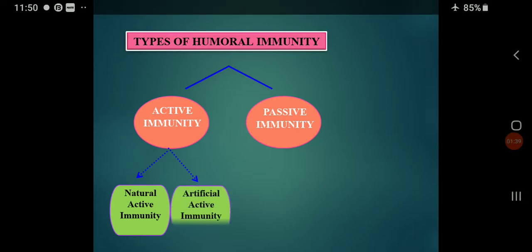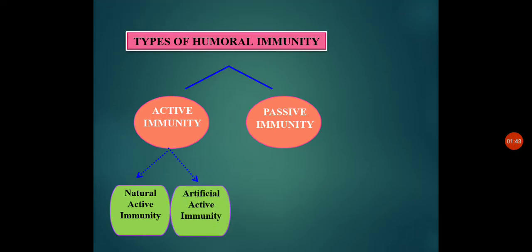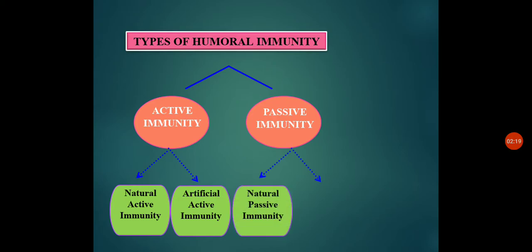Active immunity is further classified into two types: natural active immunity and artificial active immunity. Natural immunity is the immunity we get by natural process with no man-made activities involved. Whereas artificial active immunity we get by an artificial process, by injecting components by ourselves. Similarly, passive immunity is divided into natural passive immunity and artificial passive immunity, based on whether the process is natural or artificial.